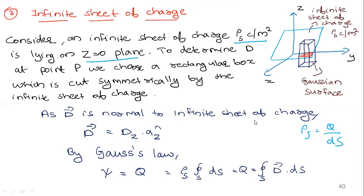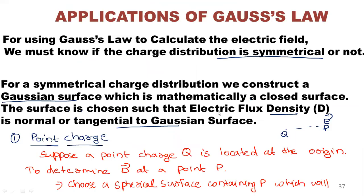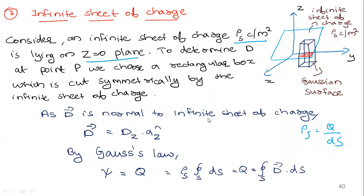To recap this session: we proved Gauss's law with a simple derivation, then studied its applications. Before applying it, you must understand what a Gaussian surface is and its properties — the electric flux density must be normal or tangential to it, and the point of interest must lie inside the surface. We covered three cases: point charge (spherical Gaussian surface), line charge (cylindrical Gaussian surface), and infinite sheet of charge (rectangular box). These three derivations are very important for exams.